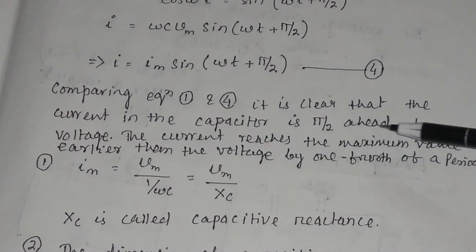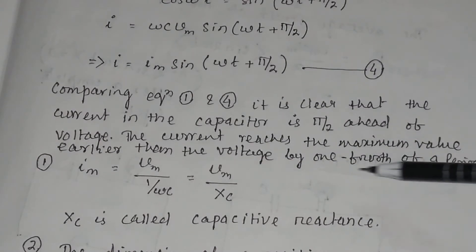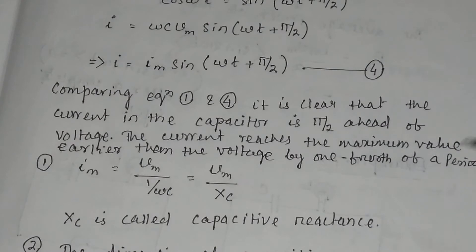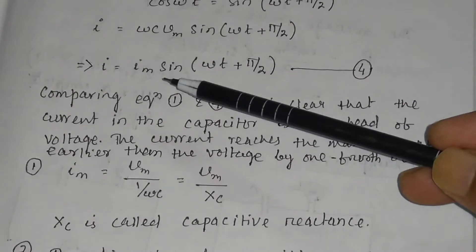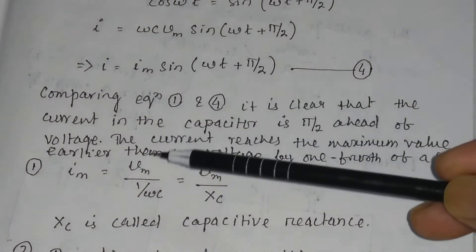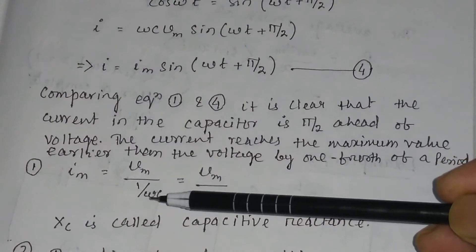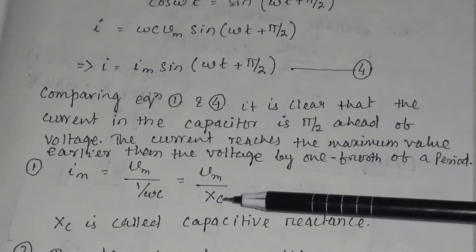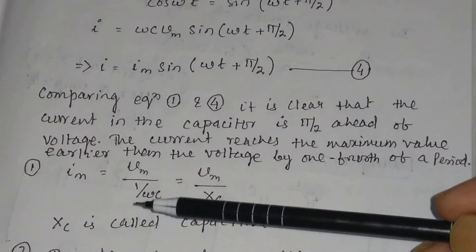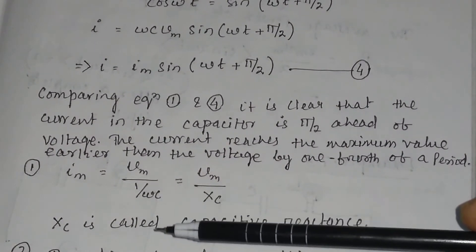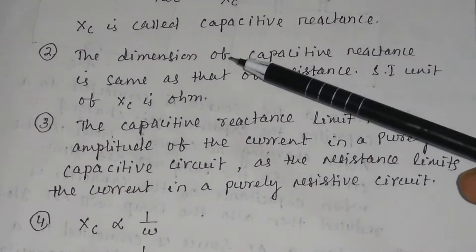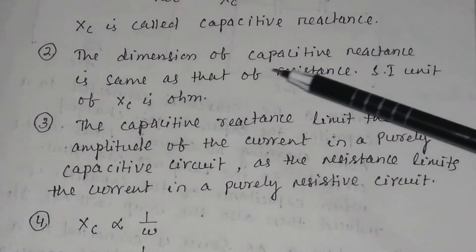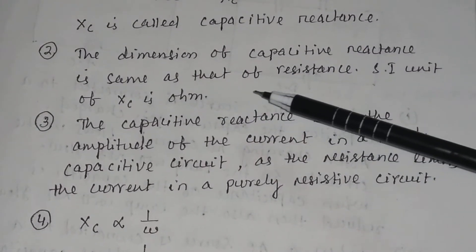That is, the current reaches its maximum value earlier than the voltage by one-fourth of a time period. Here, Im = ωC Vm, or we can write Im = Vm / (1/ωC) = Vm / Xc. Here, Xc = 1/(ωC) is called the capacitive reactance. The dimension of the capacitive reactance is the same as that of resistance.